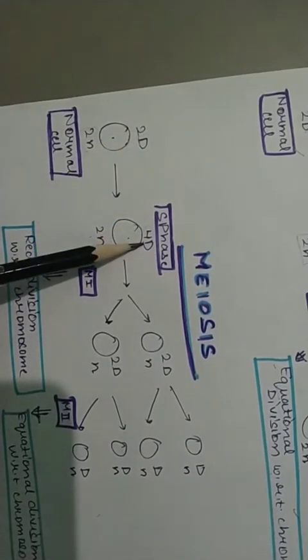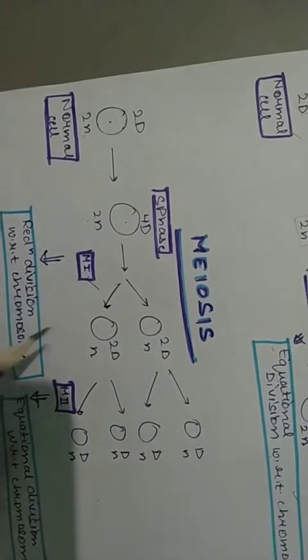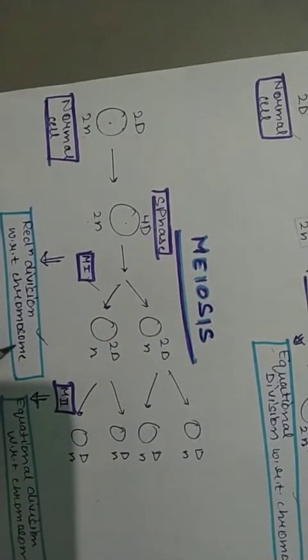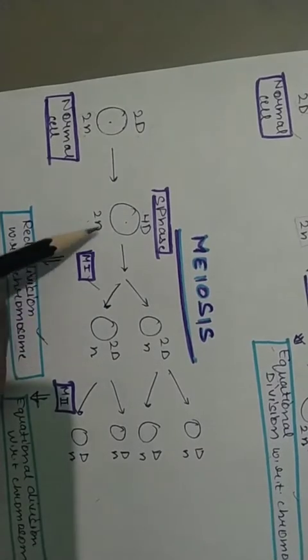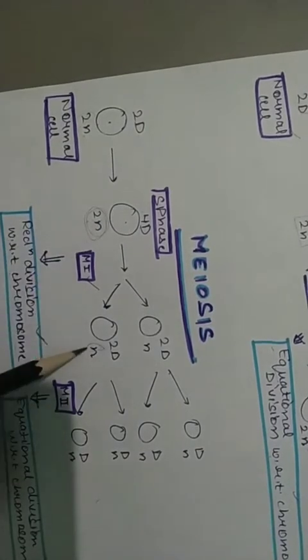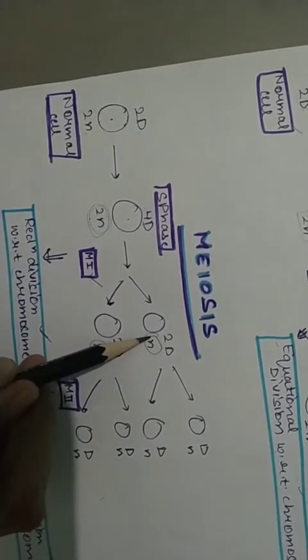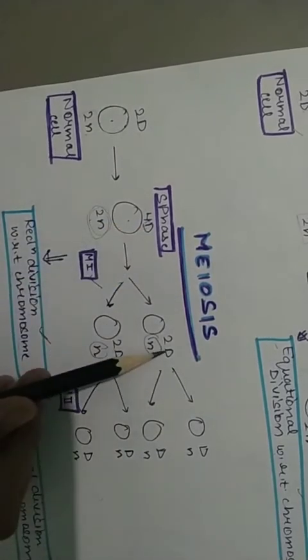Ab meiosis 1 hui. Meiosis 1 ko hum reductional division bolte hai with respect to chromosome. To jo chromosome number they, woh n ke andar divide ho gaya. Thik hai.